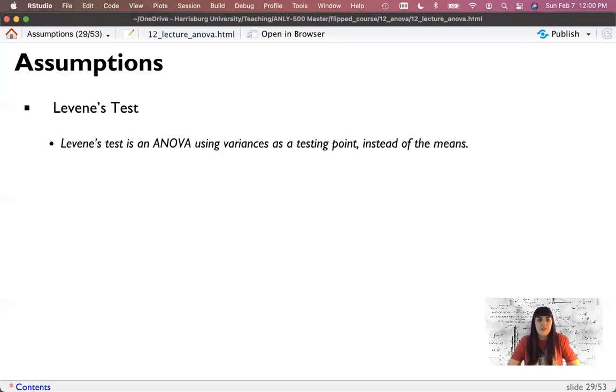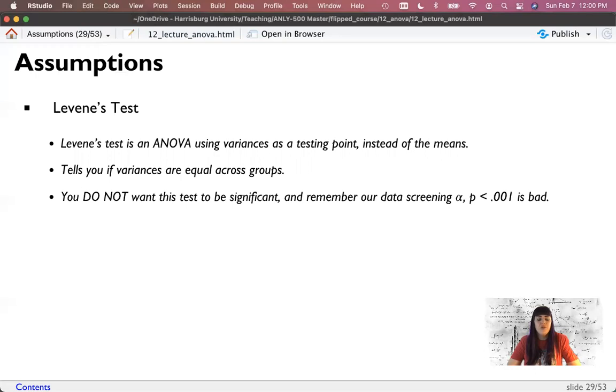So let's look at the Levene's test. Levene's test is an ANOVA on variances rather than the ANOVA on means. It tells you if the variances are equal across groups. And you don't want this to be significant. Because that would imply that there are differences in the variances, which is not good for our ANOVA test. But remember the rule in data screening. If it's p less than .001, because our rule in data screening is we want it to be really bad before we do anything. We don't want to use 0.05. We want to use 0.01, just like we do for outliers.